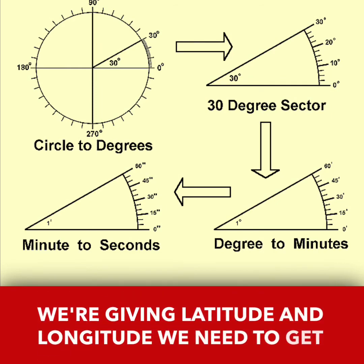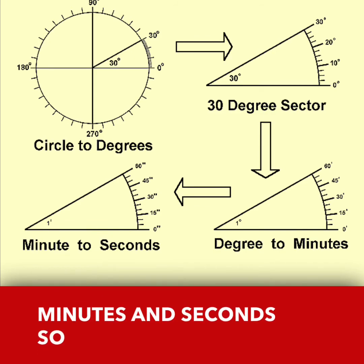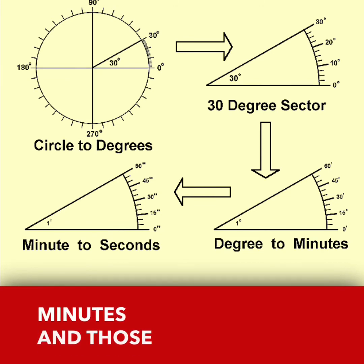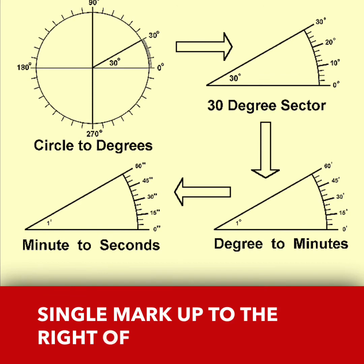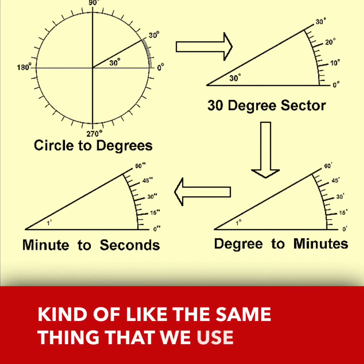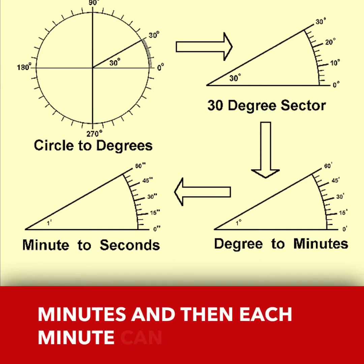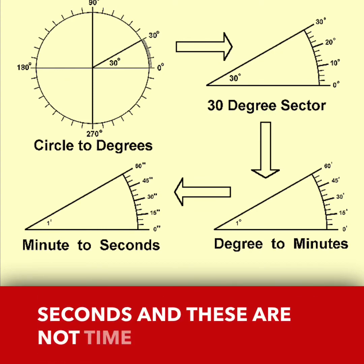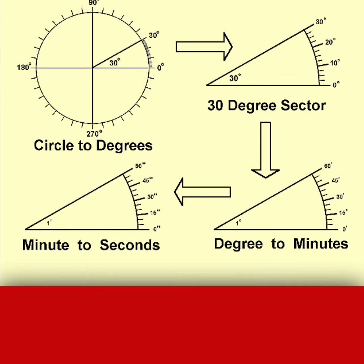Sometimes when giving latitude and longitude we need more precision than the nearest degree, so we use degrees, minutes, and seconds. A circle is 360 degrees; each degree can be divided into 60 minutes, which are one-sixtieth of a degree and are marked by a single tick mark. Each minute can be further divided into 60 seconds, marked by two tick marks. These are arc minutes and arc seconds — not time minutes and seconds.